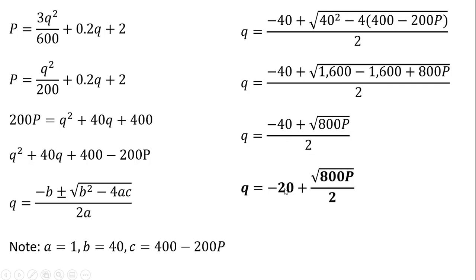Minus 40 divided by 2 is minus 20. And we have our supply equation. So the quantity supplied here, the firm's supply, is a function of price. And you'll notice as P increases, the quantity supplied increases because we've got a plus in front here.